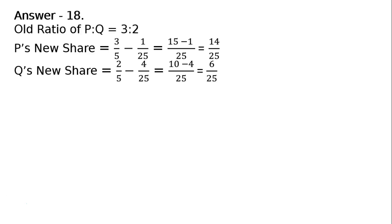Now this is P and Q. And R's new share is: R is getting 1/25th from P and from Q 4/25th. Hence LCM is 25, 1 plus 4 is equal to 5/25.